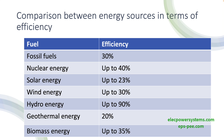Tidal energy is a renewable energy source that uses the energy of ocean tides to generate electricity. The efficiency of tidal power plants depends on the location and technology used, but the average efficiency is around 80 to 90 percent. The advantage of tidal energy is that it is clean and predictable, but the disadvantage is that it is limited to certain coastal locations and can have significant environmental impacts.